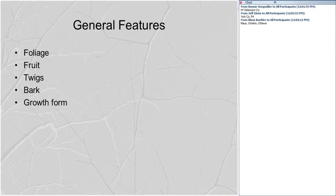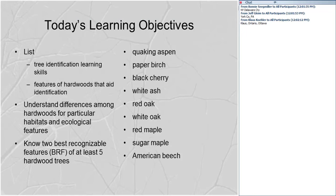When we talk about identifying trees, we want to cover the species running from shade intolerant — quaking aspen and paper birch — down to shade tolerant — sugar maple and American beech. The learning objectives are to list identification skills, list features of hardwoods that aid in their identification, cover ecological features and habitats, and by the end be able to zero in on the best recognizable features for at least five of those ten species.